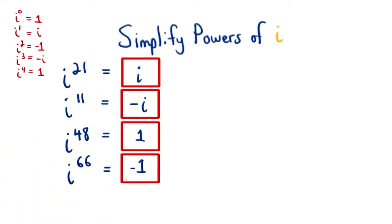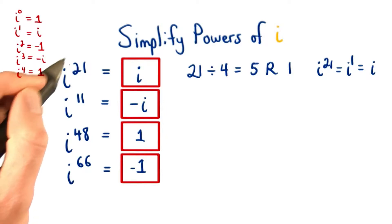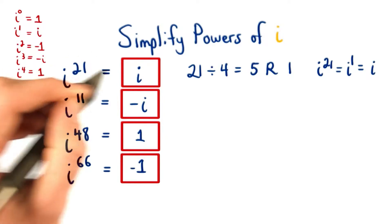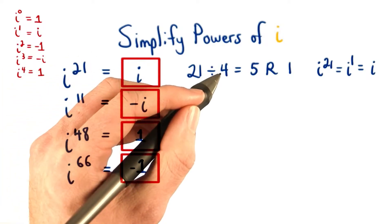Here are the four answers. Great work if you found those. We know our pattern of i repeats every fourth power, so we want to take this power, 21, and divide it by 4.